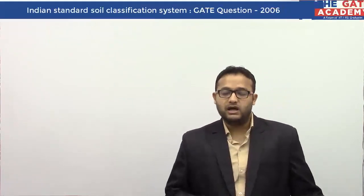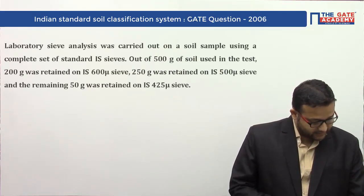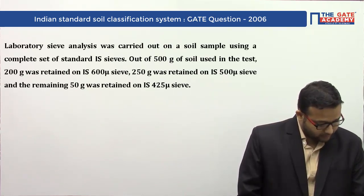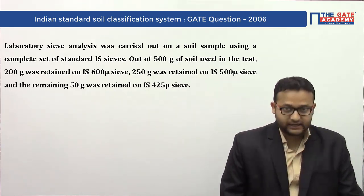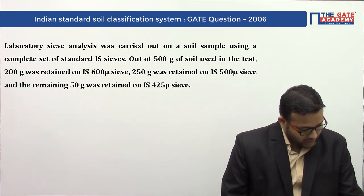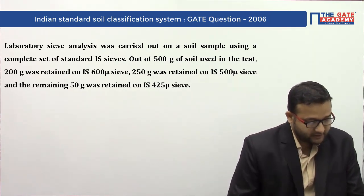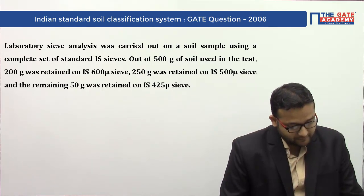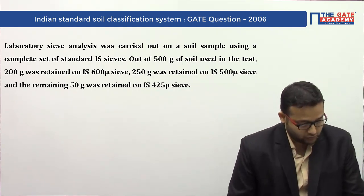Today we will solve one problem asked in GATE 2006 for a total of four marks, because it was a linked answer question from geotechnical engineering. The problem states: laboratory sieve analysis was carried out on a soil sample using a complete set of standard IS sieves. Out of 500 grams of soil used in the test, 200 grams was retained on IS 600 micron sieve, 250 grams was retained on IS 500 micron sieve, and the remaining 50 grams was retained on IS 425 micron sieve.